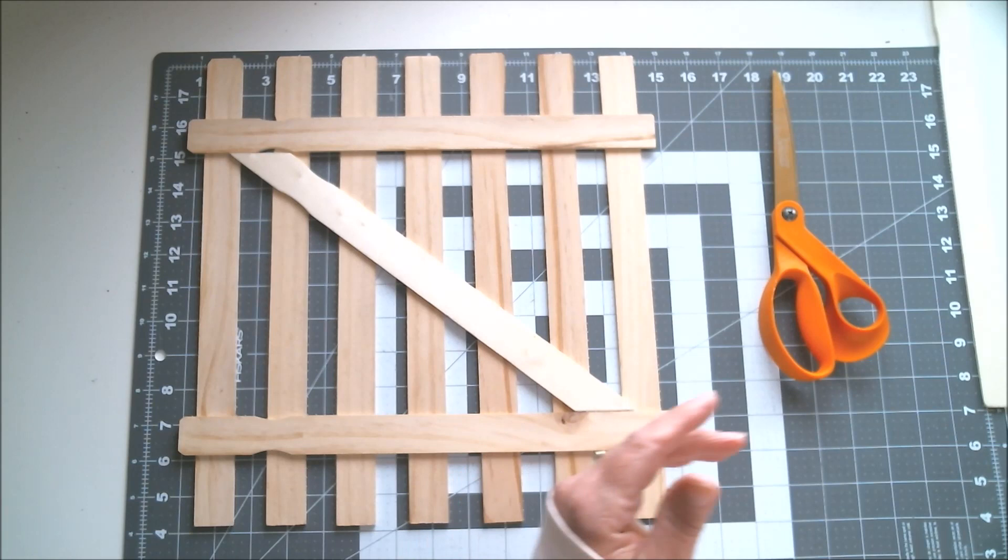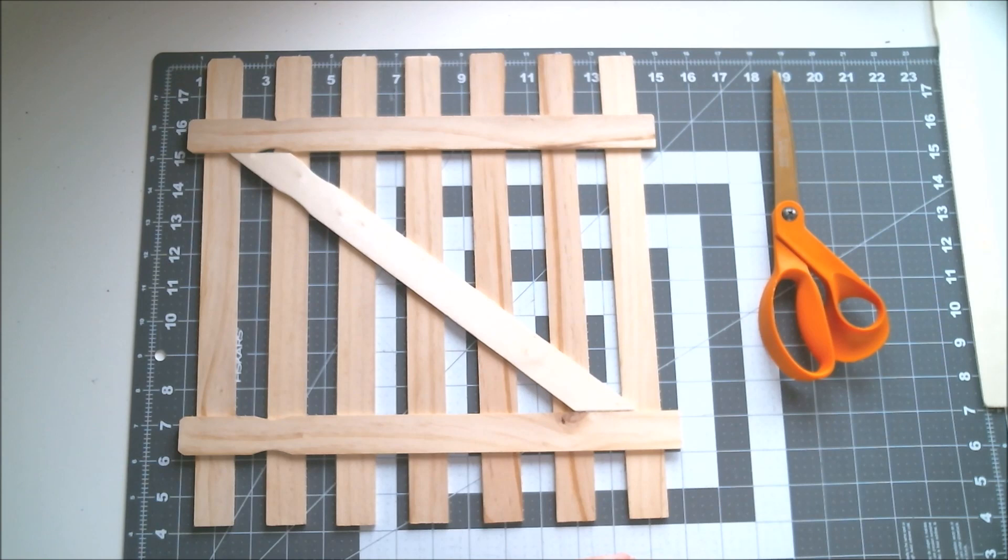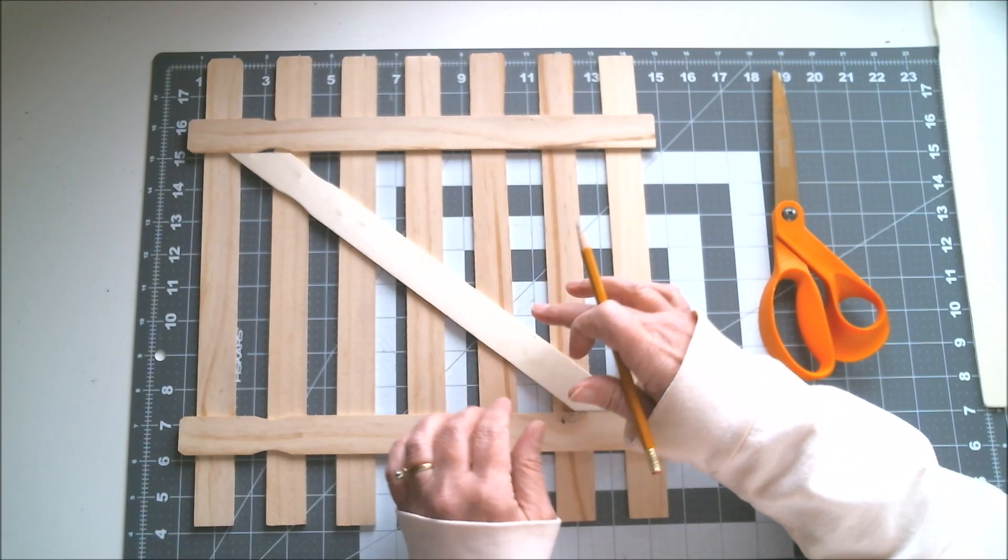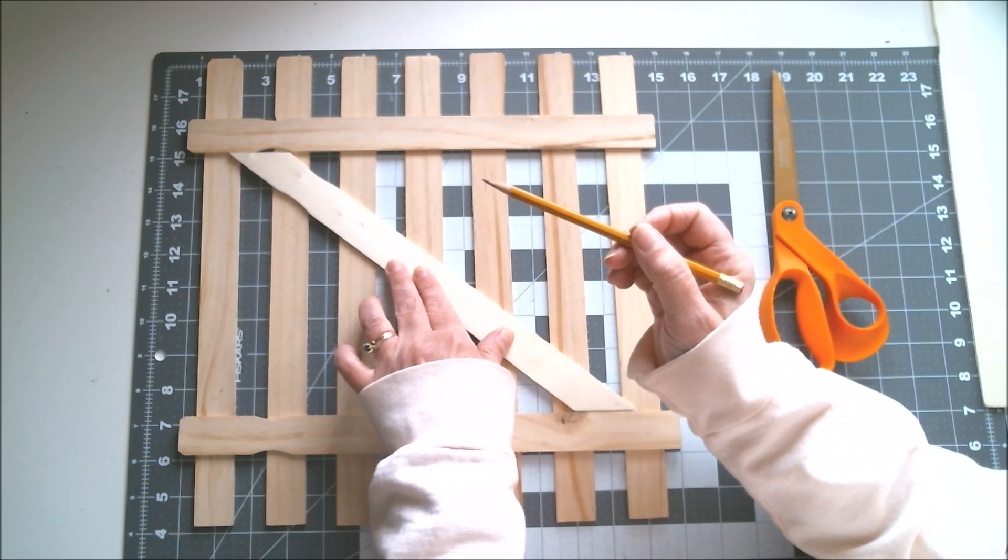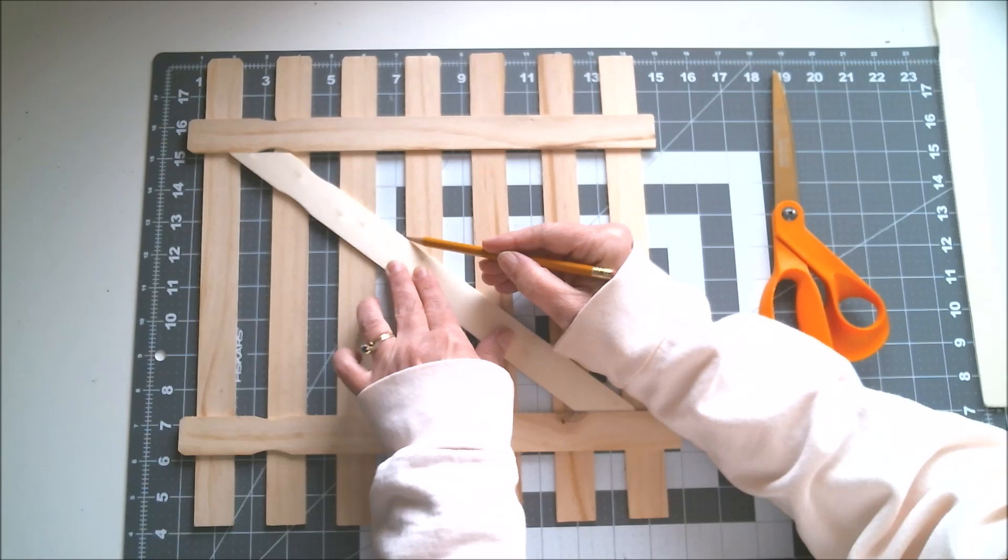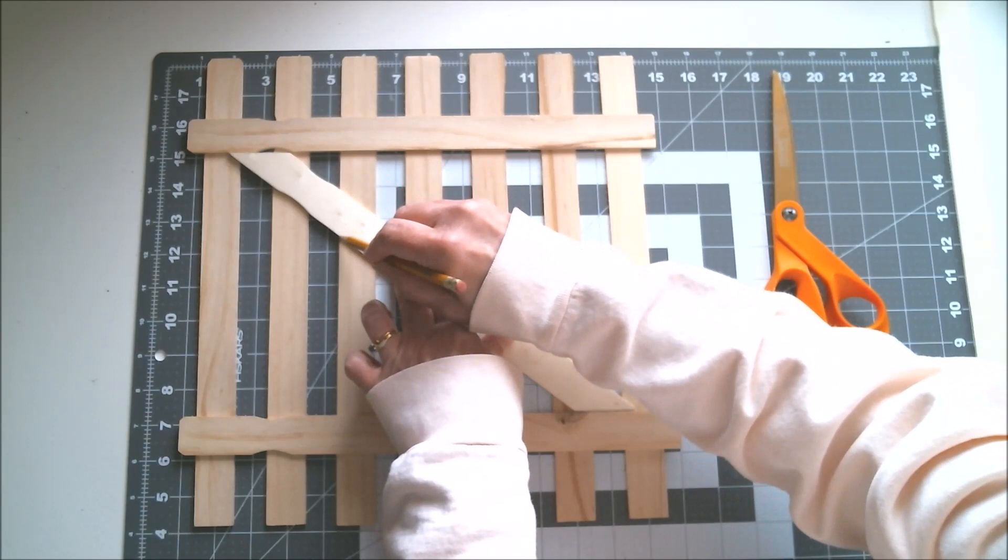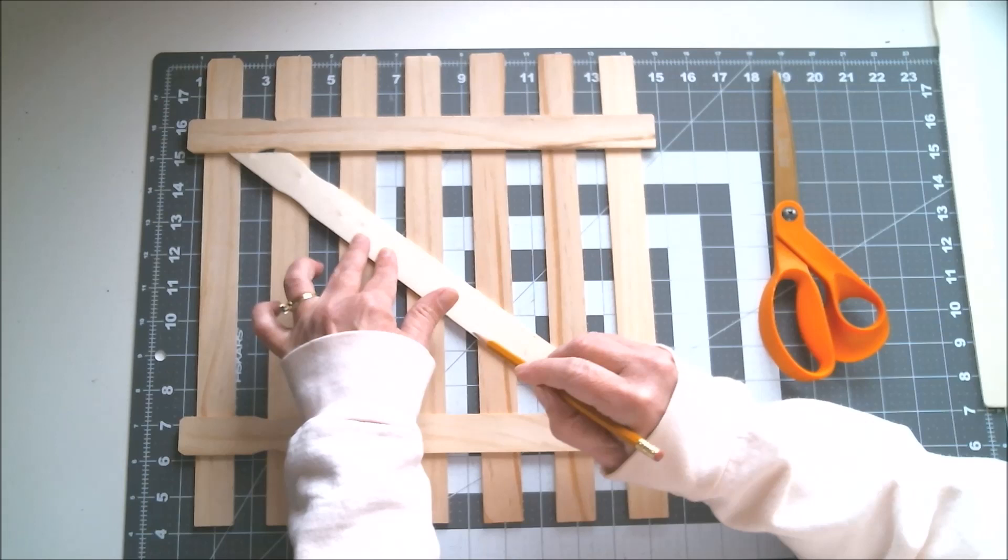I've got a pencil here. First thing I want to tell you is I'm going to be painting this so it doesn't matter that this stick doesn't match because I had to get a different stick. It's also not going to matter if I have any pencil marks. What I'm going to do is I'm just going to lightly mark right along each of these sticks so that I know exactly where I want to put the adhesive. You don't have to worry about it showing unless you're not planning on painting over this.